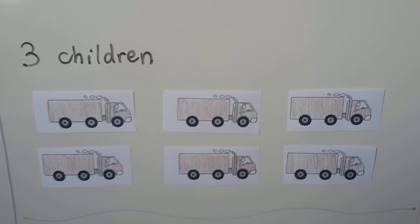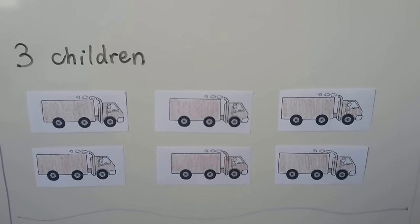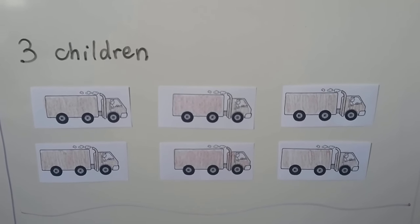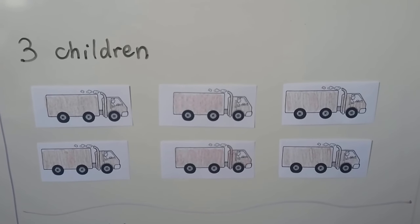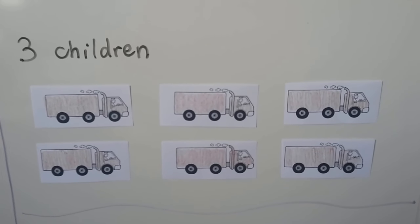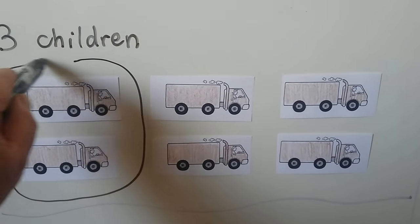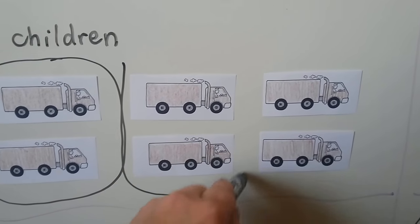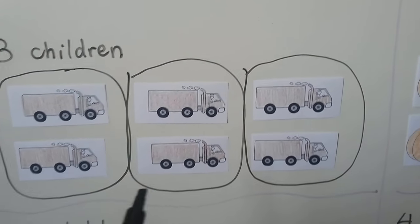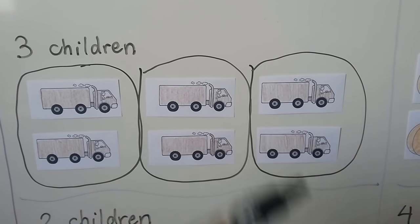There are three children and we have one, two, three, four, five, six toy trucks. We need to circle each child's fair share. How many trucks will each child get so they each have the same amount? We can give two, and two, and two. We've made three groups — one, two, three — and each of the children will get two toy trucks.